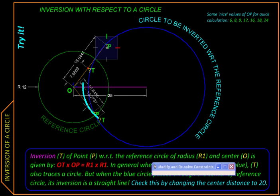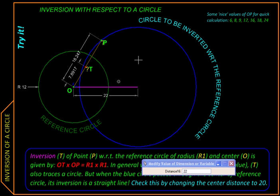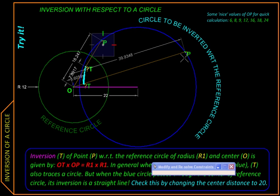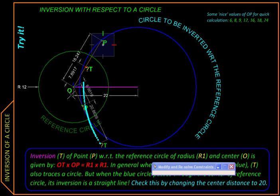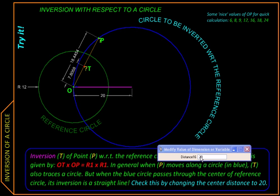And if we continue that trend, so if we change this to say 22, then we will be getting a circle which is still bigger. And you might have guessed what will happen if we make this distance say 20, thereby making the path of P pass through the center O.